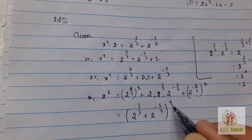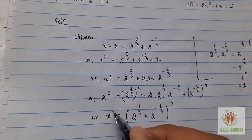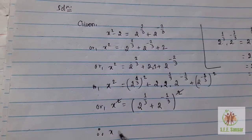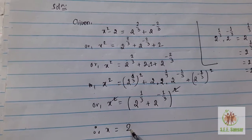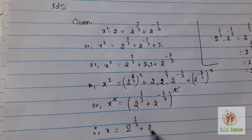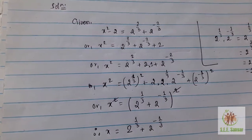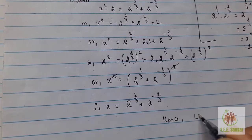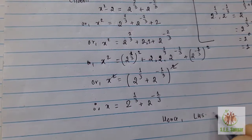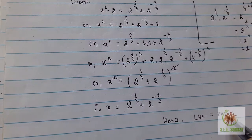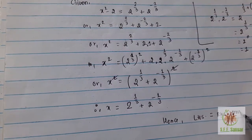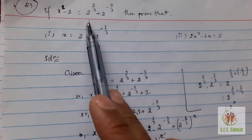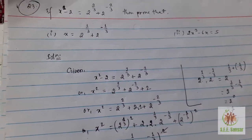Cancel this square, so we'll have finally x = 2^(1/3) + 2^(-1/3), which we had to prove. Hence proved. That's all. Thank you for watching. In the next video, I'll prepare another question for you. Thank you for watching.